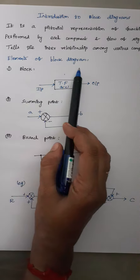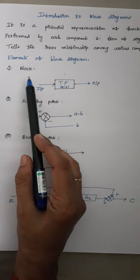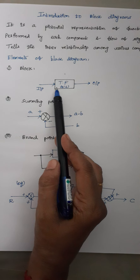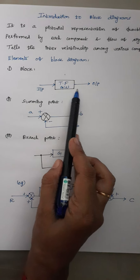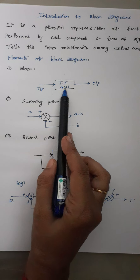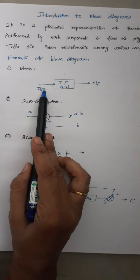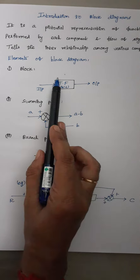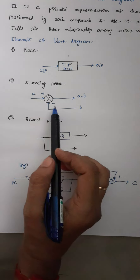The next one is elements of block diagram. Regarding elements, the first element is block. The function performed by each component is represented by its own transfer function. To this transfer function, we are having some input, and to that input we are getting the respective output. So this is a block.